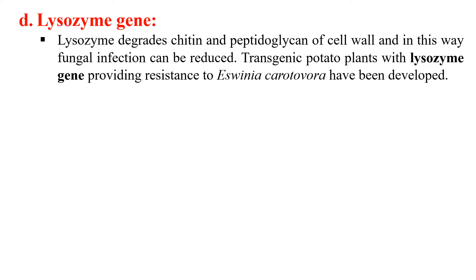Next, under pathogenesis-related proteins, is the lysozyme gene. Lysozyme is an enzyme that degrades chitin as well as the peptidoglycan of the bacterial cell wall. If we transfer the lysozyme gene to our plant, the plant will express lysozyme, and when a pathogen enters the plant, the lysozyme will degrade its cell wall, making the plant resistant. An example is transgenic potato modified by introduction of the lysozyme gene, which provided resistance against Erwinia carotovora, a specific bacterial pathogen.